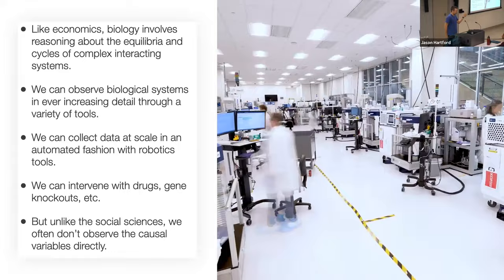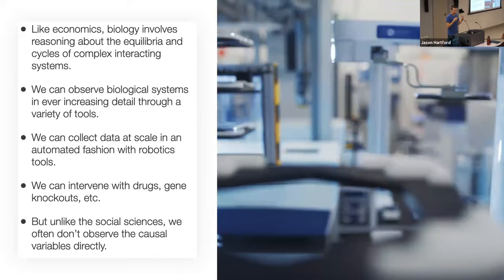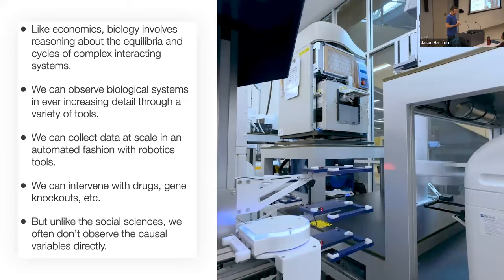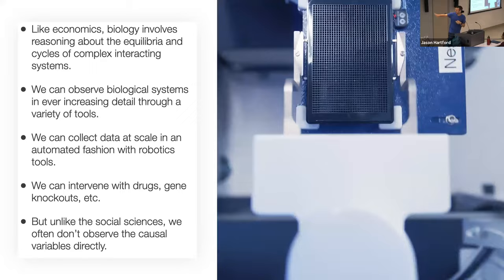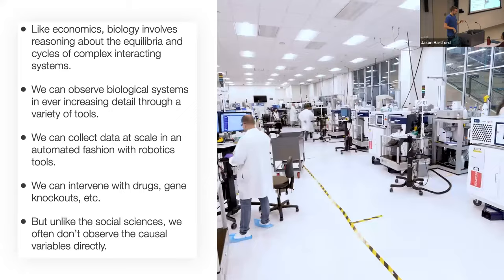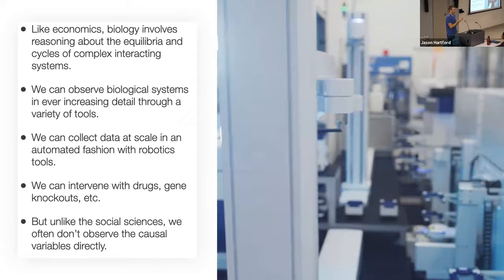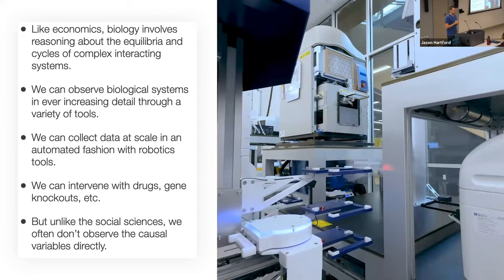Biology involves reasoning about the equilibrium of complex interacting systems — similar in structure to economics. We can observe biological systems in ever-increasing detail, collecting data at scale in an automated fashion with robots taking photos of cells. We can also intervene, which is great from a causal inference perspective. But unlike the social sciences, we often don't observe variables directly — we get unstructured data instead of a nicely labeled data frame.